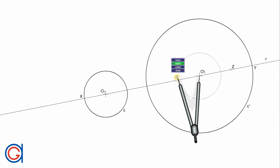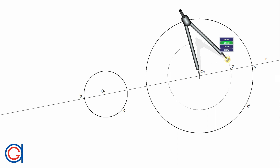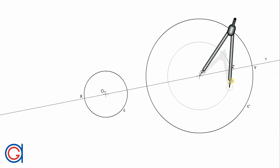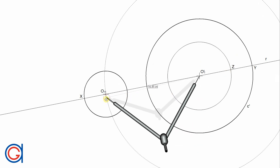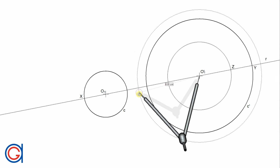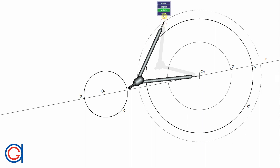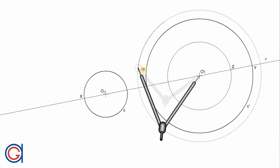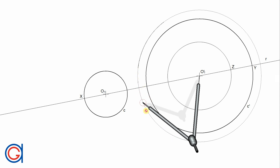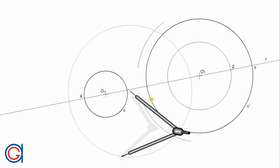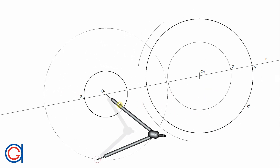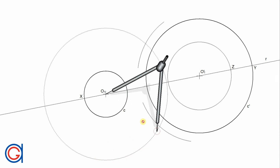The radius O prime 1 Z is the difference between both radii. So now, setting the compass on point O prime 1 and with a radius O prime 1 Z, we draw an auxiliary circle. The next step is to work out the perpendicular bisector of the line segment O1 O1 prime. Setting our compass on O prime 1 and with a radius slightly longer than half the line segment, we scribe an arc above and below the line. Then, with the same radius and setting the compass on O1, we scribe two more arcs intersecting our previously drawn arcs.